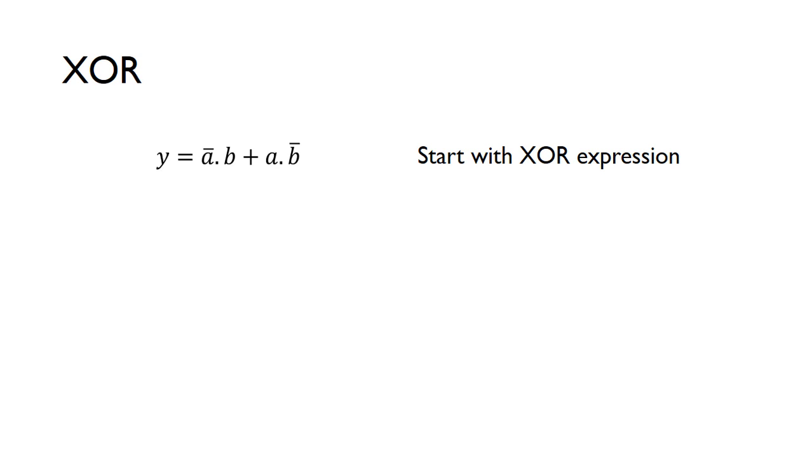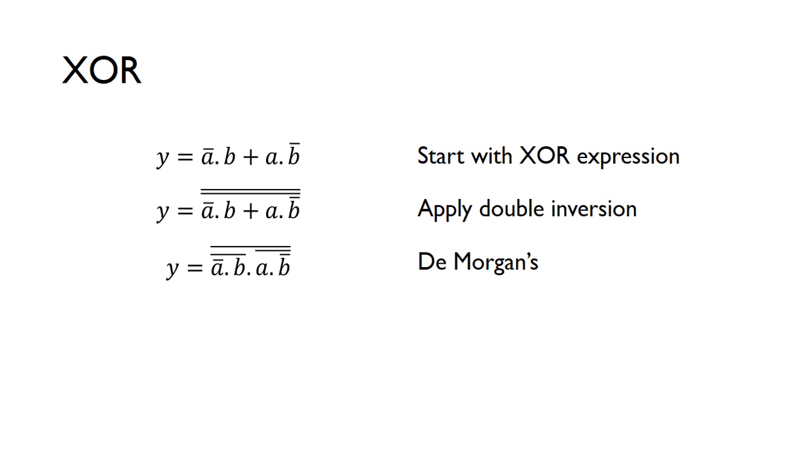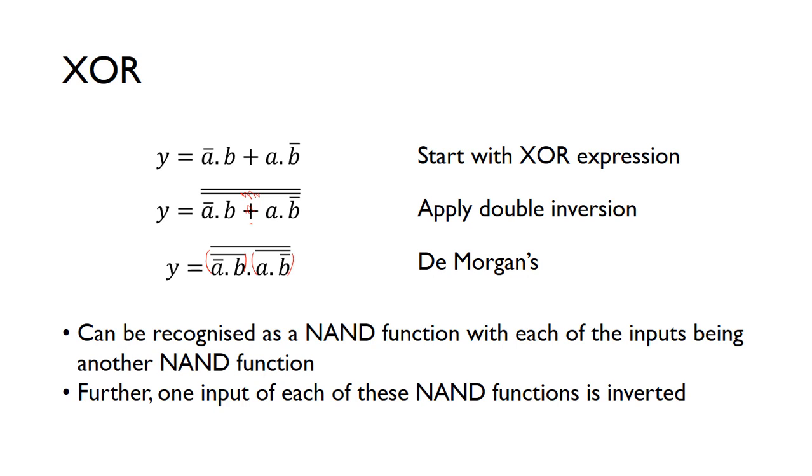So XOR - there's two versions of an XOR, as we'll see. We can start from the normal XOR expression. This is just the SOP expression from the truth table for an XOR. We can apply double inversion and then apply De Morgan's here. So again, break this line, break the line in the bottom, change this to an AND, we'll get left with this expression.